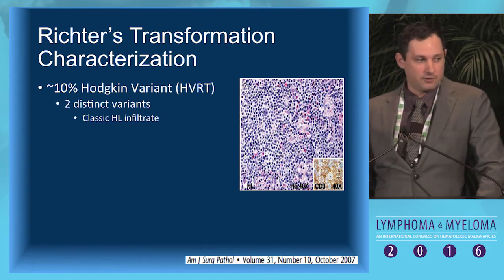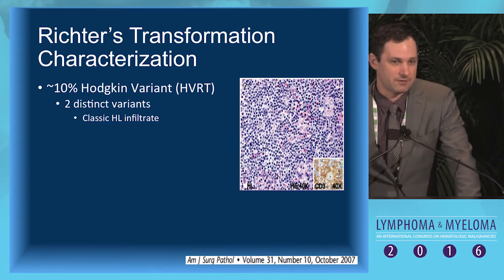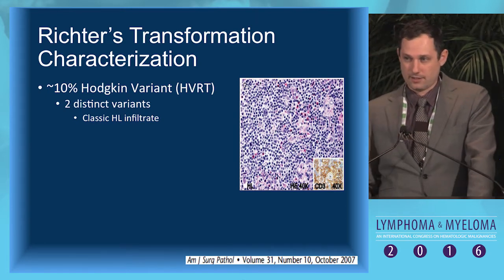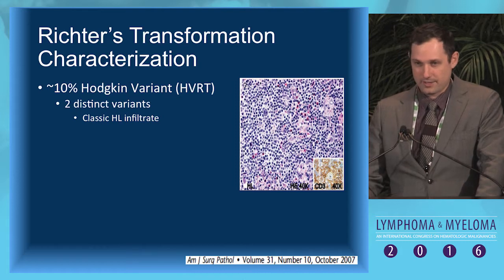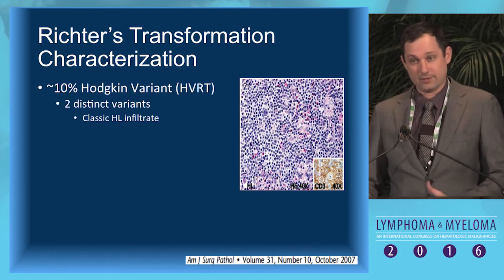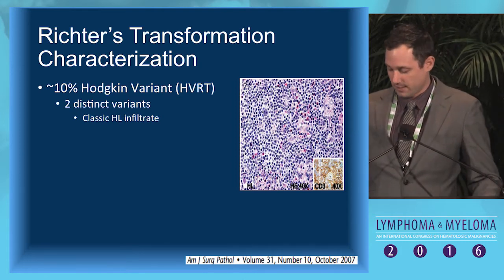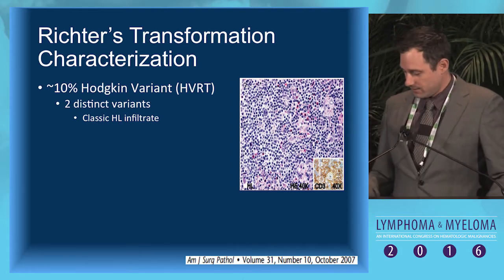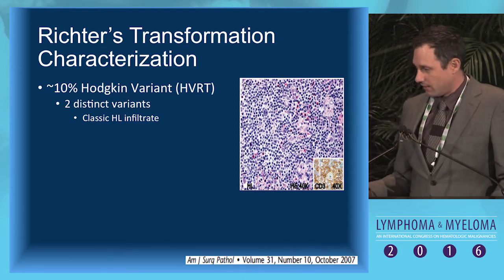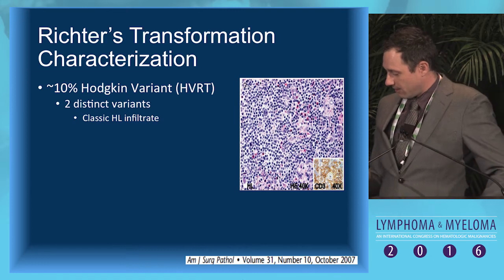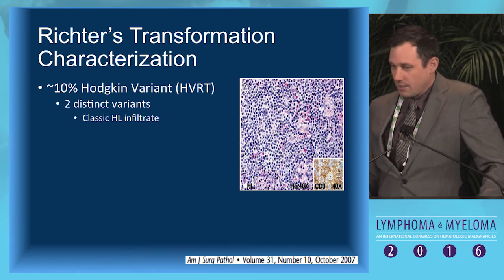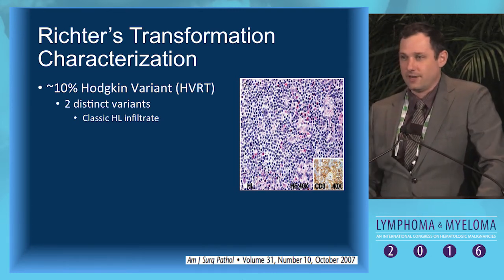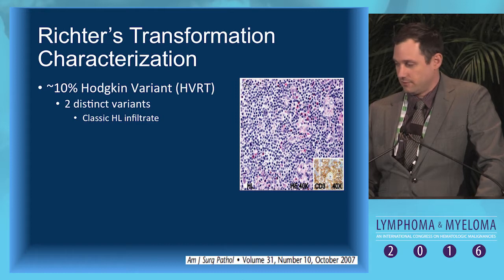It's important to note there is also a Hodgkin variant of Richter's transformation, representing about 10% of these transformations. There are two distinct variants of this Hodgkin variant transformation.